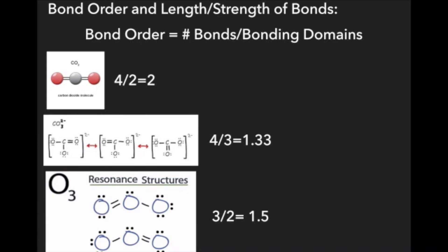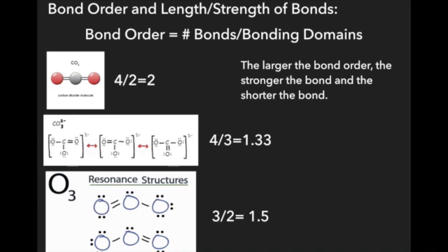Why do these numbers matter? The larger your bond order, the stronger the bond is going to be. For example, which has a stronger bond: carbon dioxide or carbonate, CO₃²⁻? Since carbon dioxide has a bond order of two while carbonate has a bond order of 1.33, carbon dioxide is going to have a stronger bond. Another thing to note: the larger your bond order, the shorter the bond is going to be. So carbon dioxide would also have a shorter bond length than carbonate because it has a bond order of two versus 1.33.